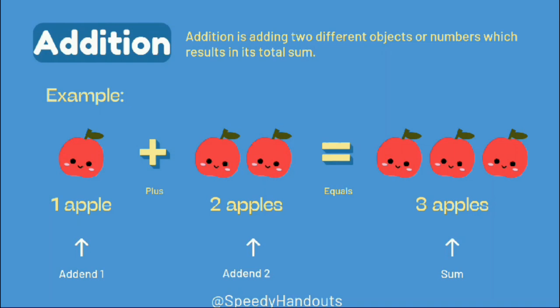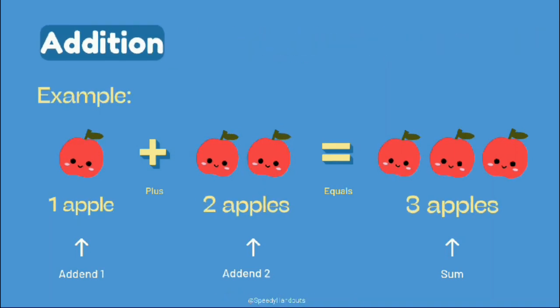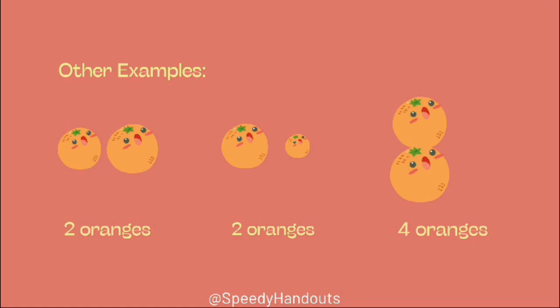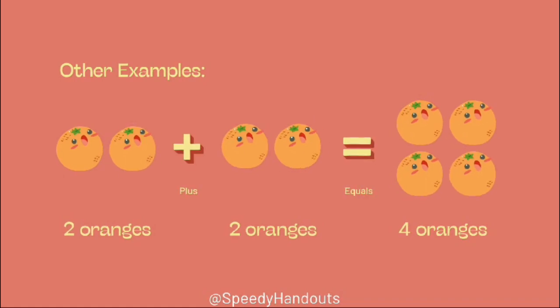1 apple plus 2 apples equals to 3 apples. Other example, 2 oranges plus 2 oranges equals to 4 oranges.